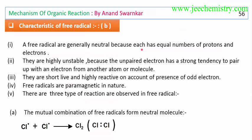Free radicals generate neutral species because they have equal numbers of protons and electrons. They are highly reactive because unpaired electrons have a strong tendency to pair with electrons from another atom — the electron deficiency gives a strong tendency to pair up with another electron, fulfilling their valence.